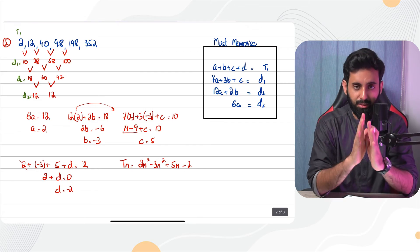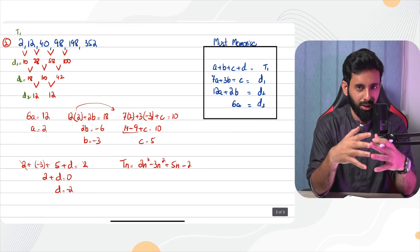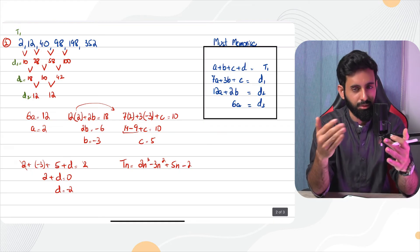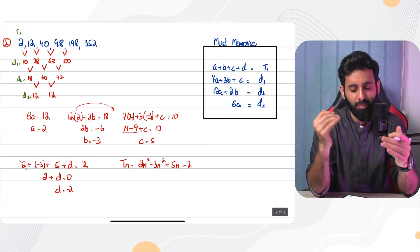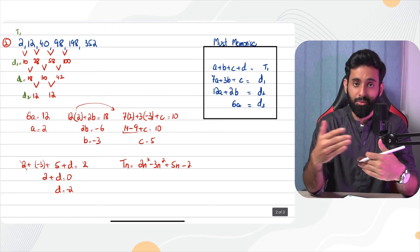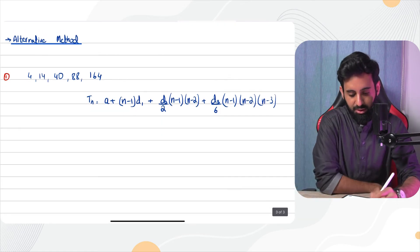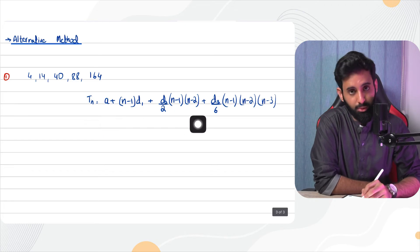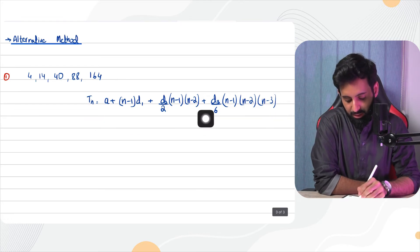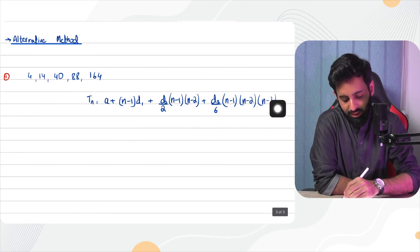If you've understood the method so far, great — you can stop here. But if you want to know an alternate method, continue watching. The alternate method looks scarier but requires memorizing only one new thing. If you recall: arithmetic uses a + (n-1)d1; quadratic adds a d2 term; cubic adds one more term involving d3.